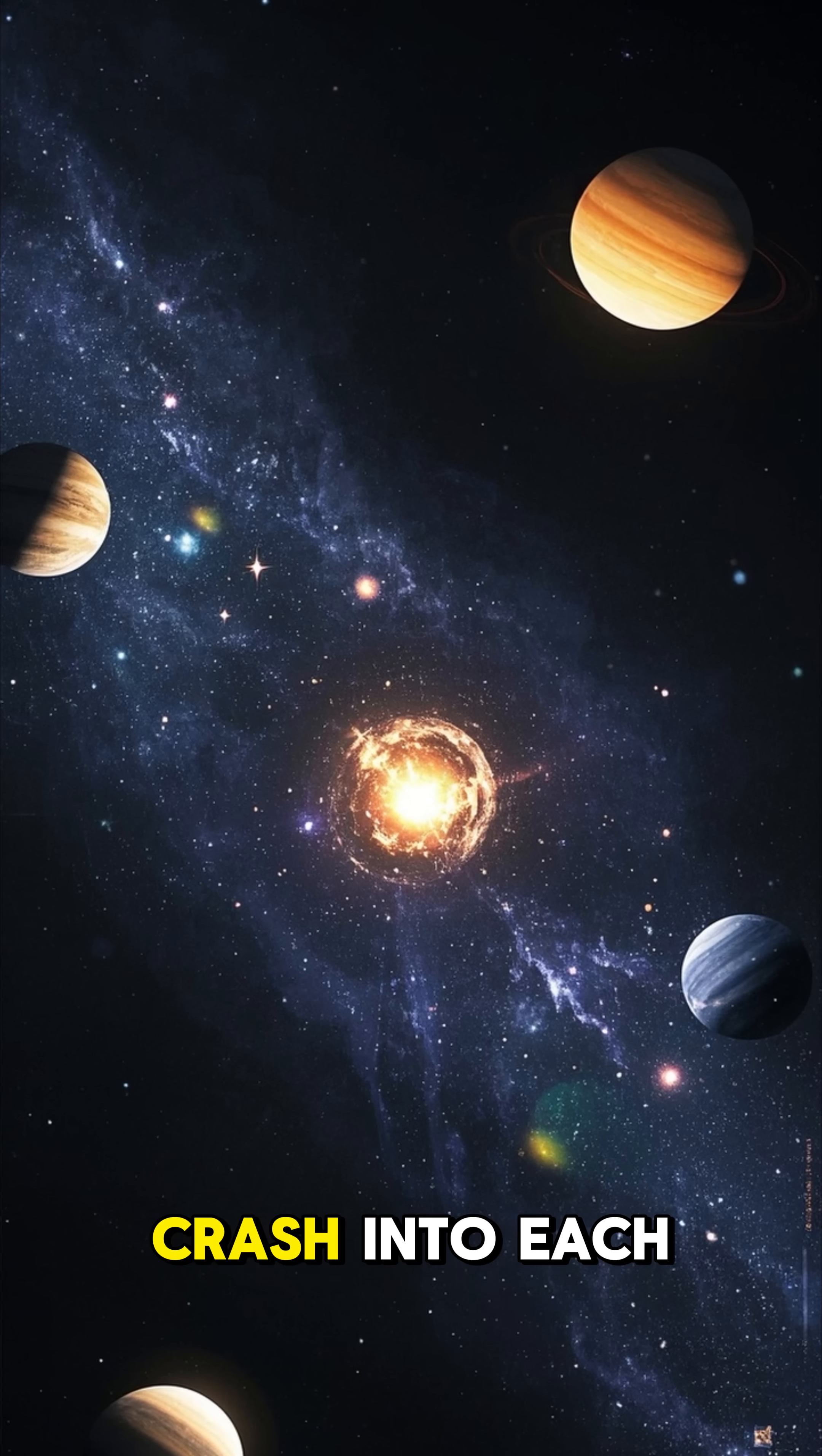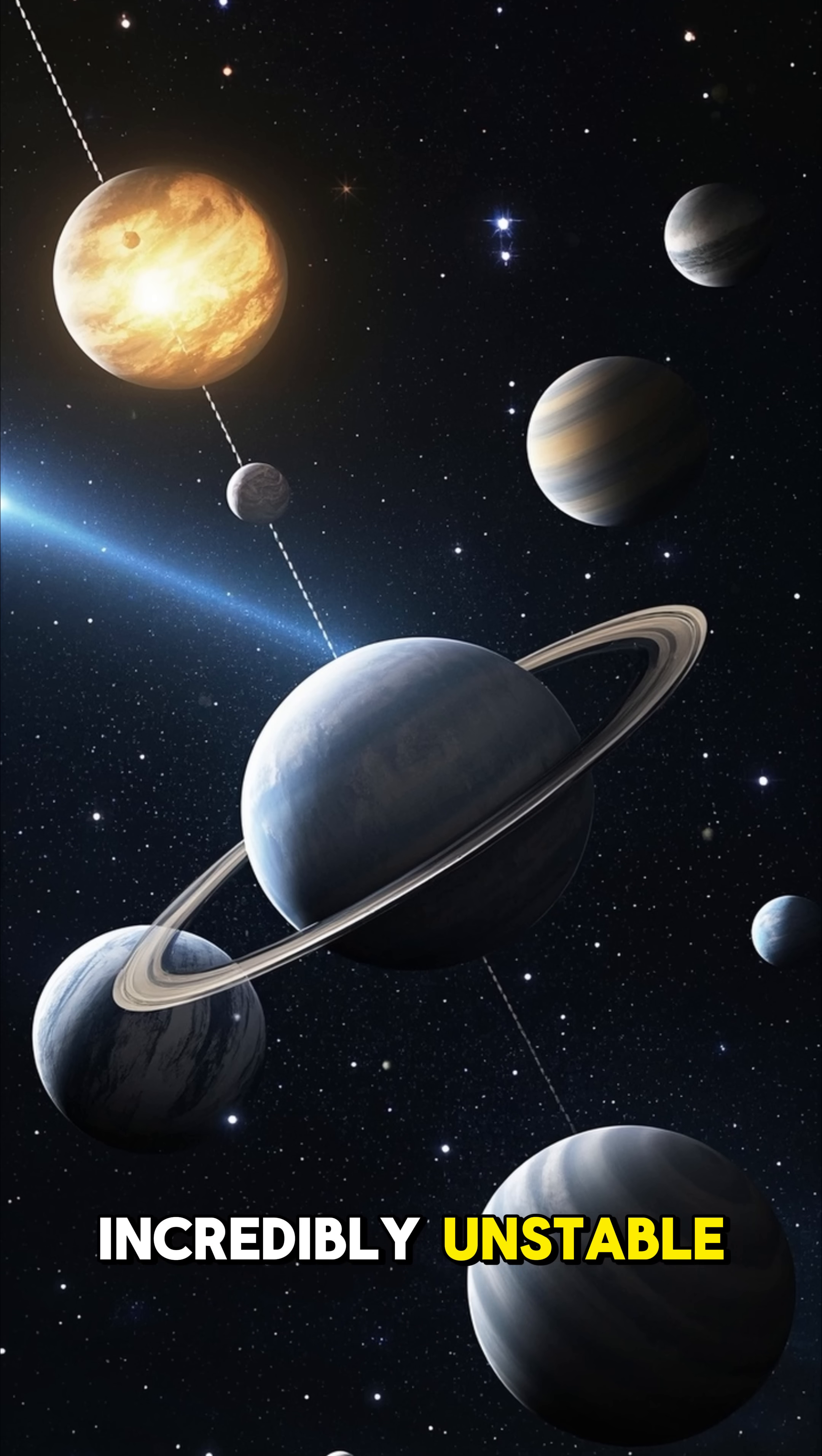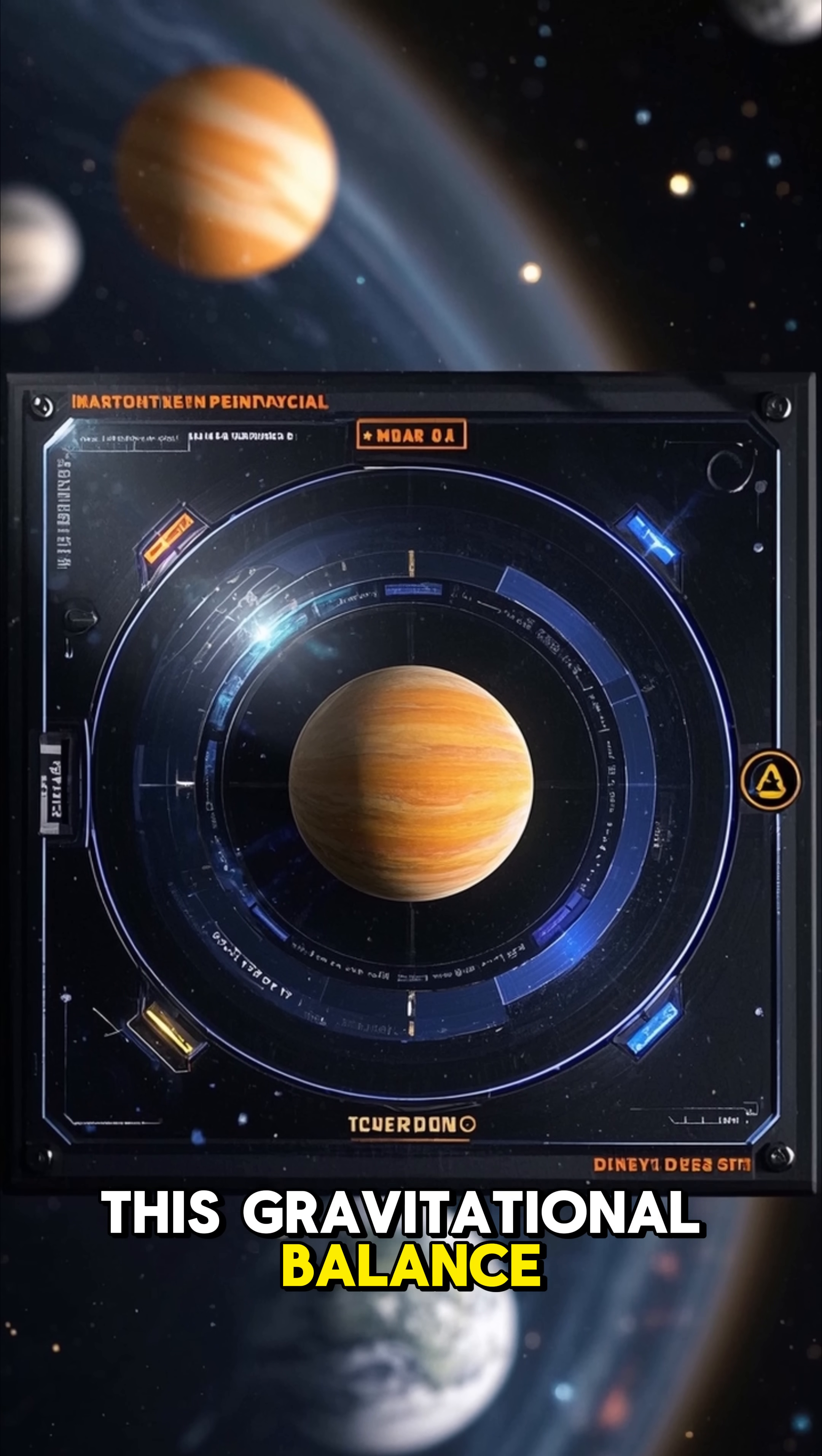fly off into outer space or crash into each other. Orbits would be unstable. Even if we could make the solar system square, it would be incredibly unstable. Planets rely on a smooth circular or elliptical path to stay in orbit around the sun.